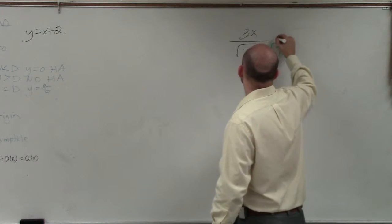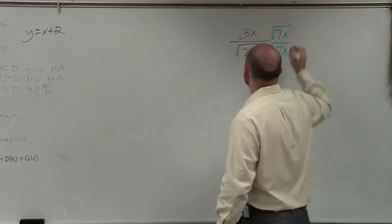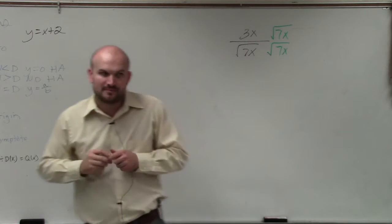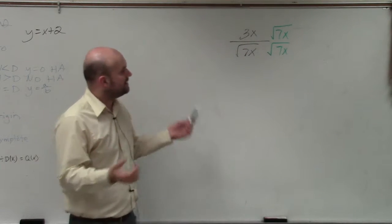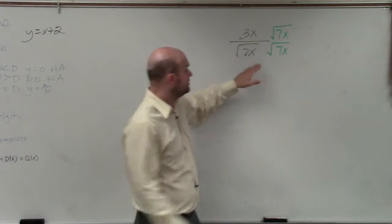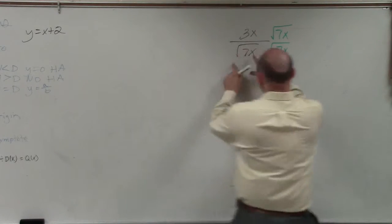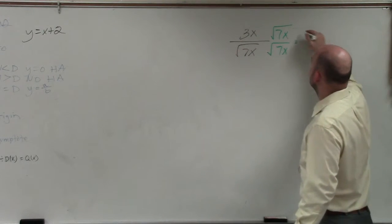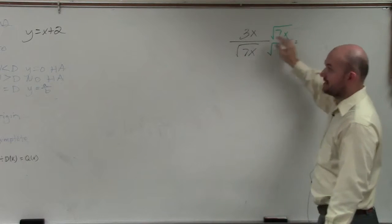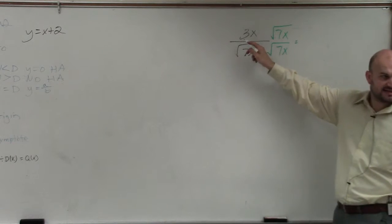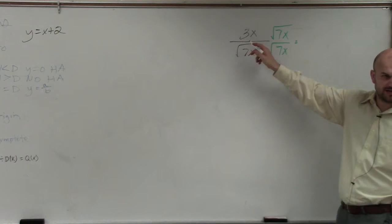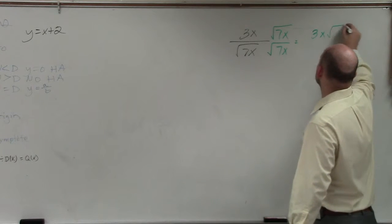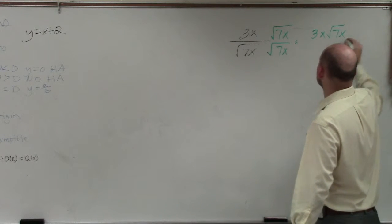So rather than saying we can divide by an irrational number, we're going to rationalize the denominator. We're going to multiply by the square root of 7x on the top and the bottom. If you guys remember multiplication, I can't multiply inside the radicand because that doesn't have a radical. So you can't multiply to the inside. So that is 3x times the square root of 7x.